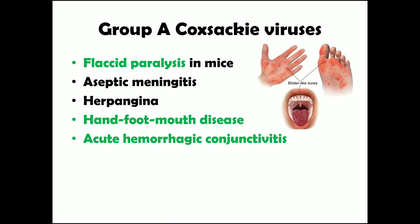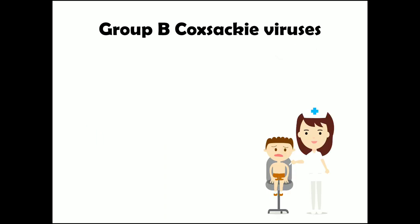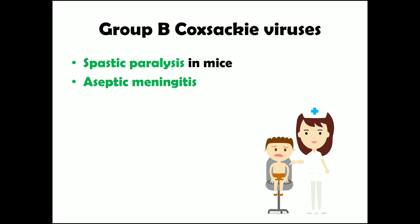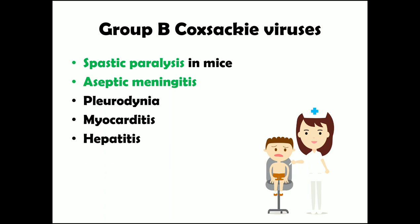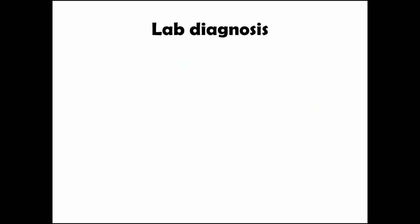Group B Coxsackieviruses can infect any age group but most commonly infect children. When injected intracerebrally into mice, they cause spastic paralysis. All serotypes of Group B can cause aseptic meningitis in humans. They can also cause pleurodynia (chest pain), myocarditis (inflammation of the myocardium), hepatitis (inflammation of the liver), and pancreatitis (inflammation of the pancreas), which can be severe enough to cause diabetes in children. They can also cause pneumonia, and can involve almost any system in the body.